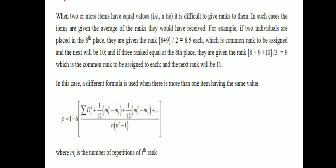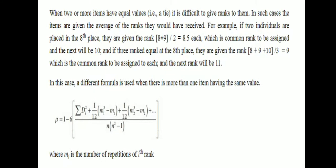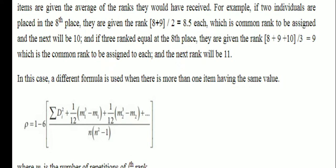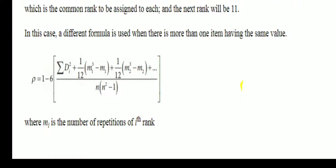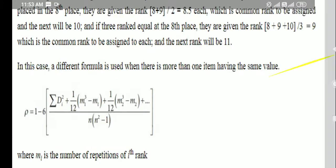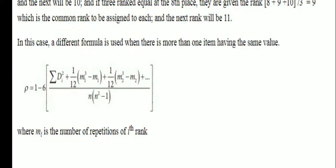The rank correlation coefficient rho is given by: rho = 1 minus 6 times [summation of di squared plus (1/12)(m1 cubed minus m1) plus (1/12)(m2 cubed minus m2) plus (1/12)(m3 cubed minus m3) and so on] divided by n times (n squared minus 1), where m1 is the number of repetitions of the i-th rank. Let us take up one example, then it will be clear.